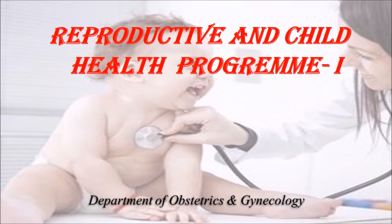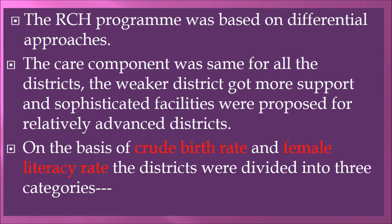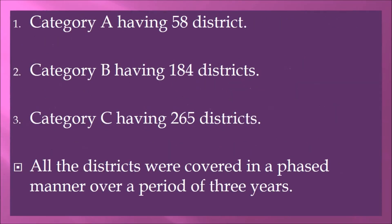The Reproductive and Child Health (RCH) program Phase 1 incorporated child survival and safe motherhood, and included two additional components related to sexually transmitted diseases and reproductive tract infections. This program was based on differential approaches — the care component was the same for all districts, but weaker districts got more support. Districts were divided into three categories based on crude birth rate and female literacy rate: Category A with 58 districts, Category B with 184 districts, and Category C with 265 districts.